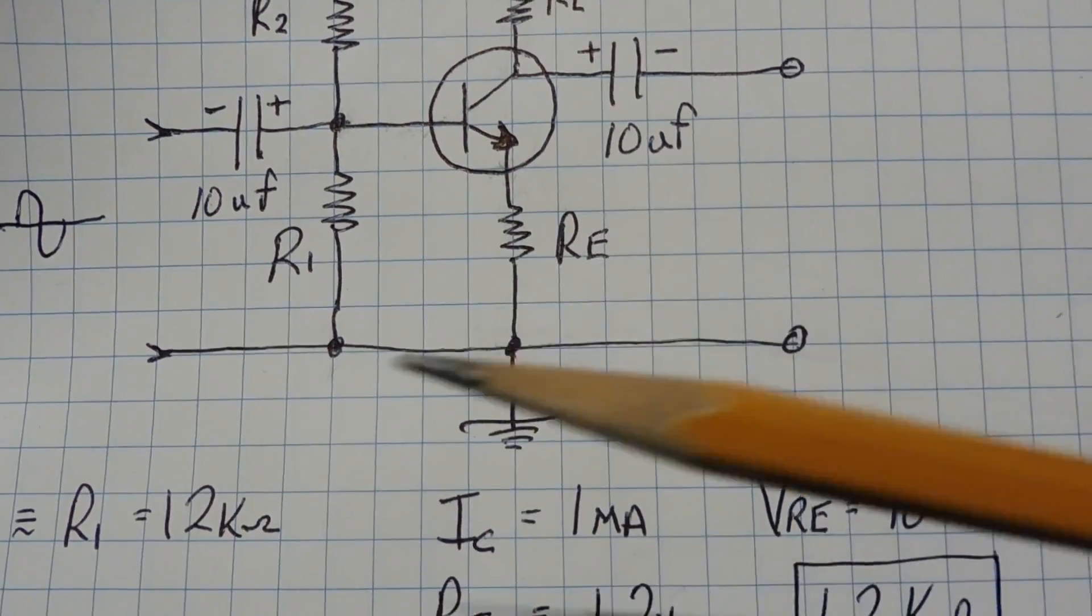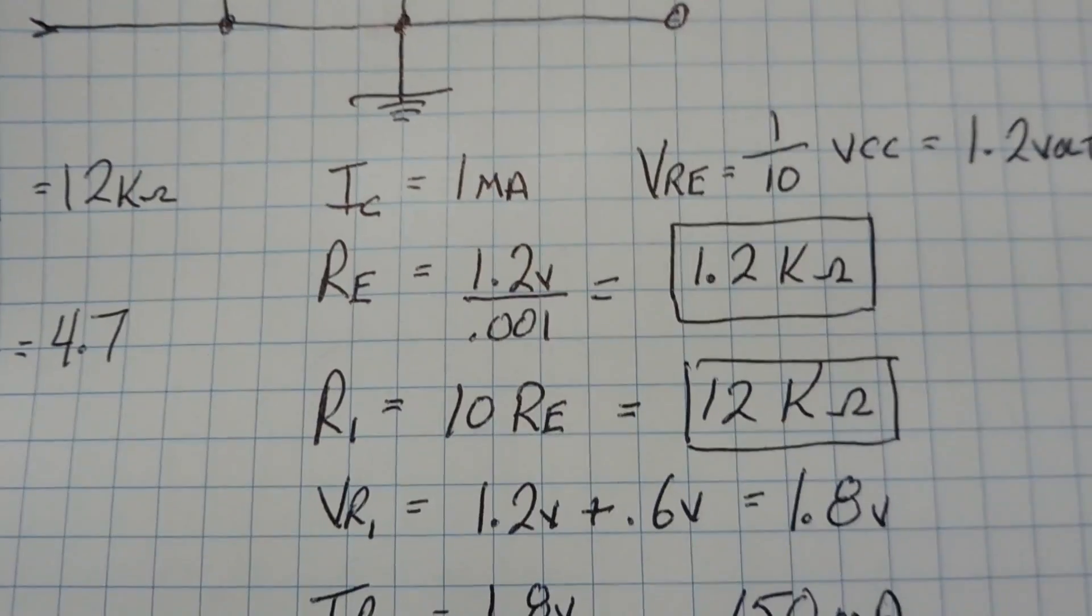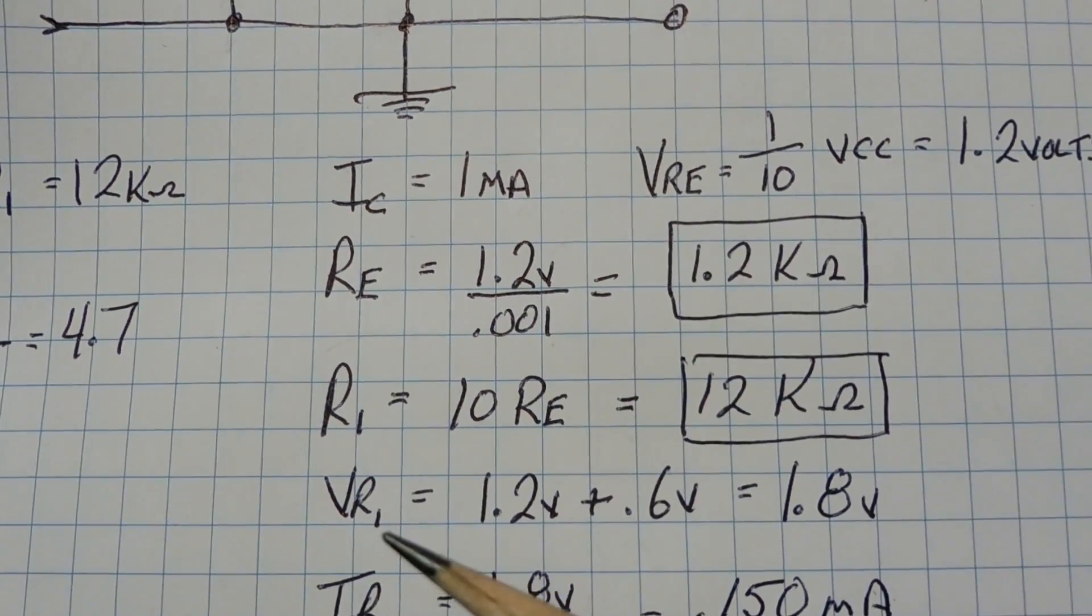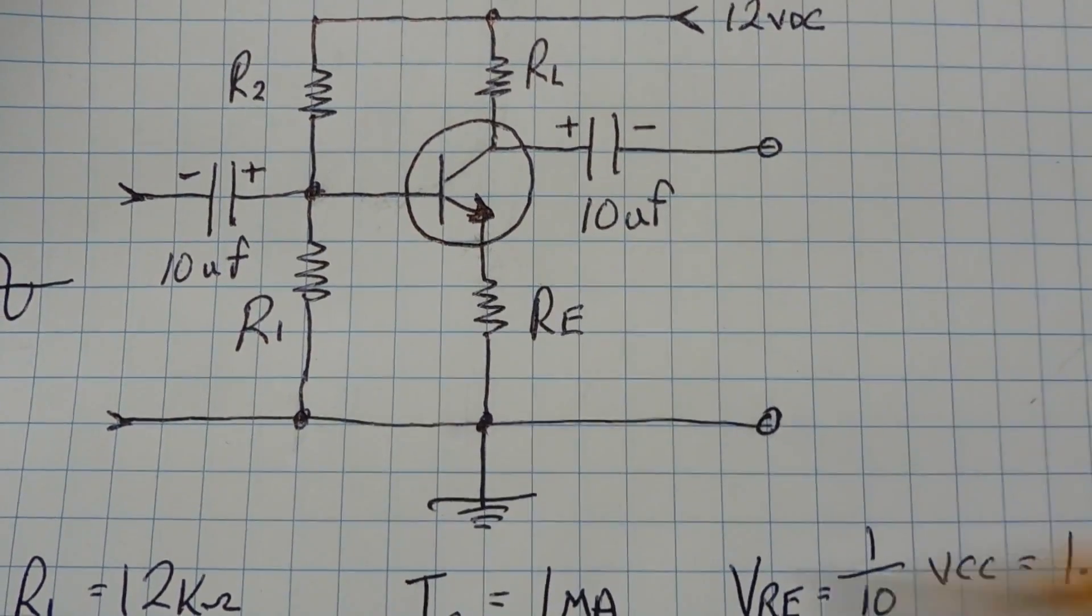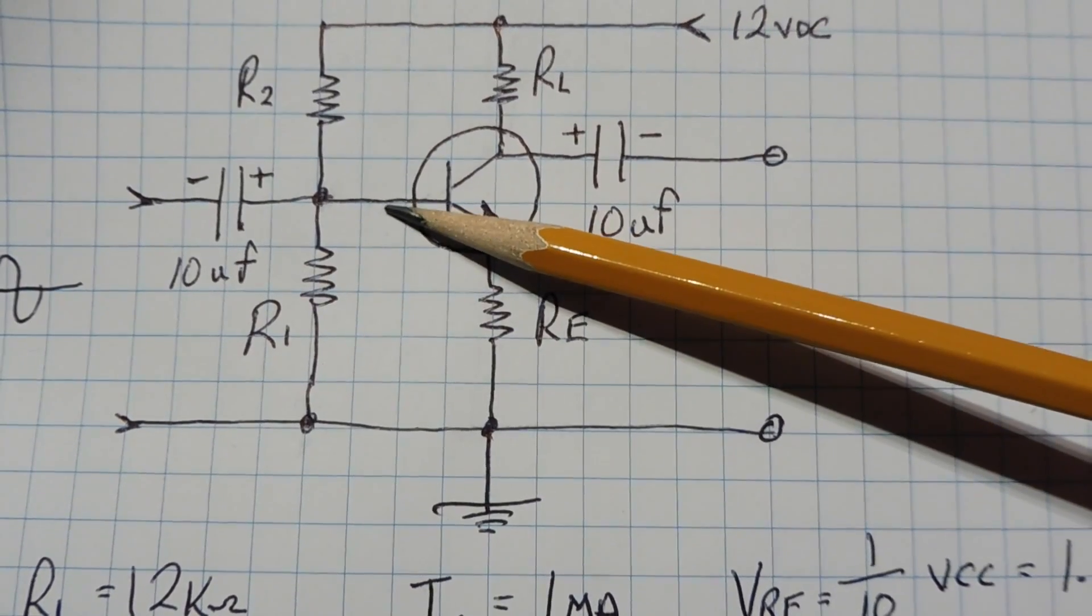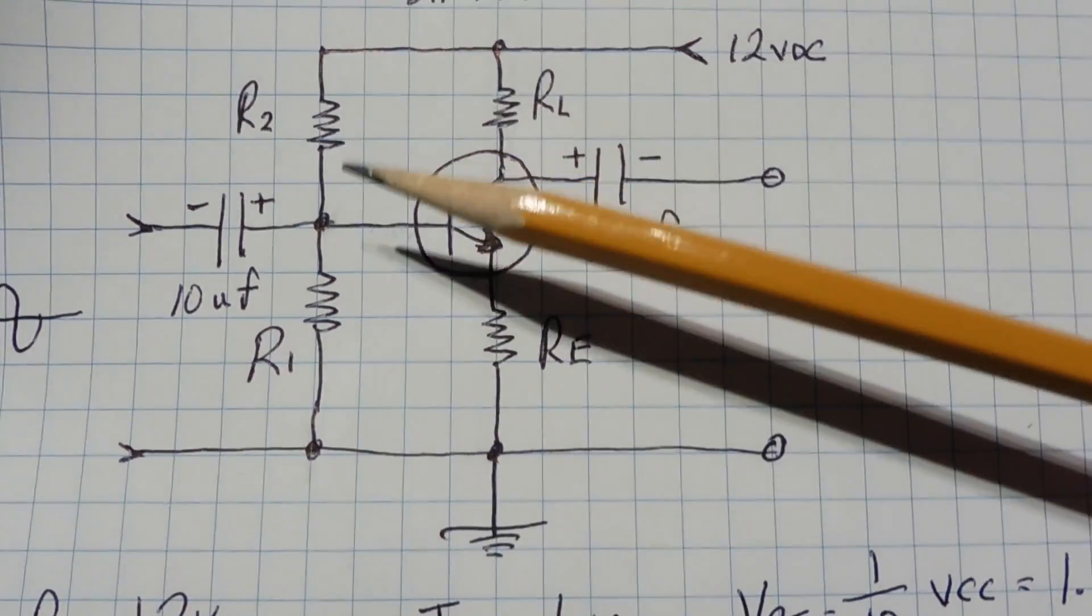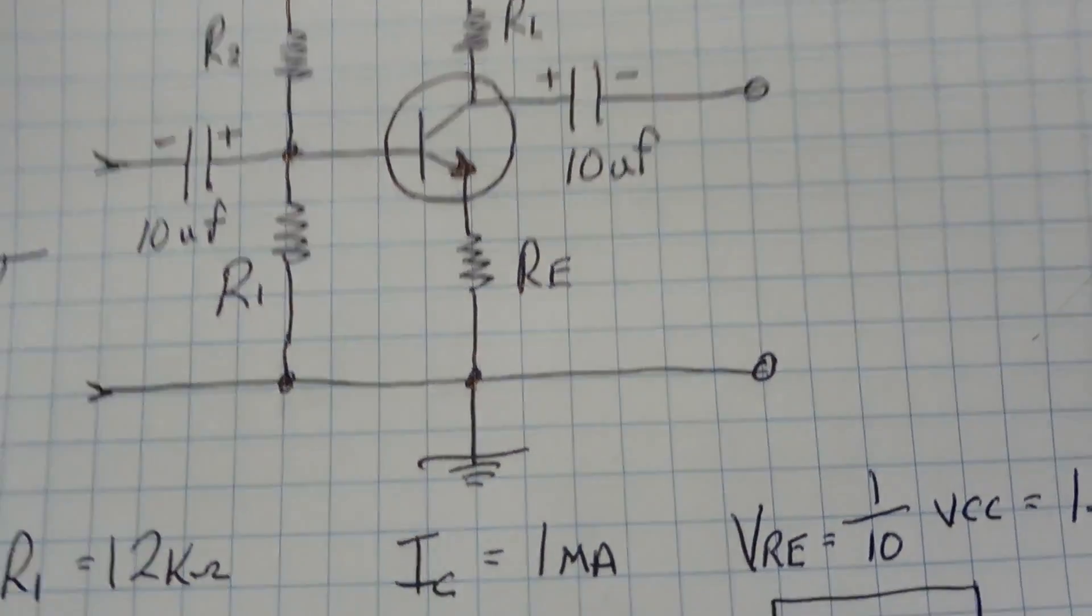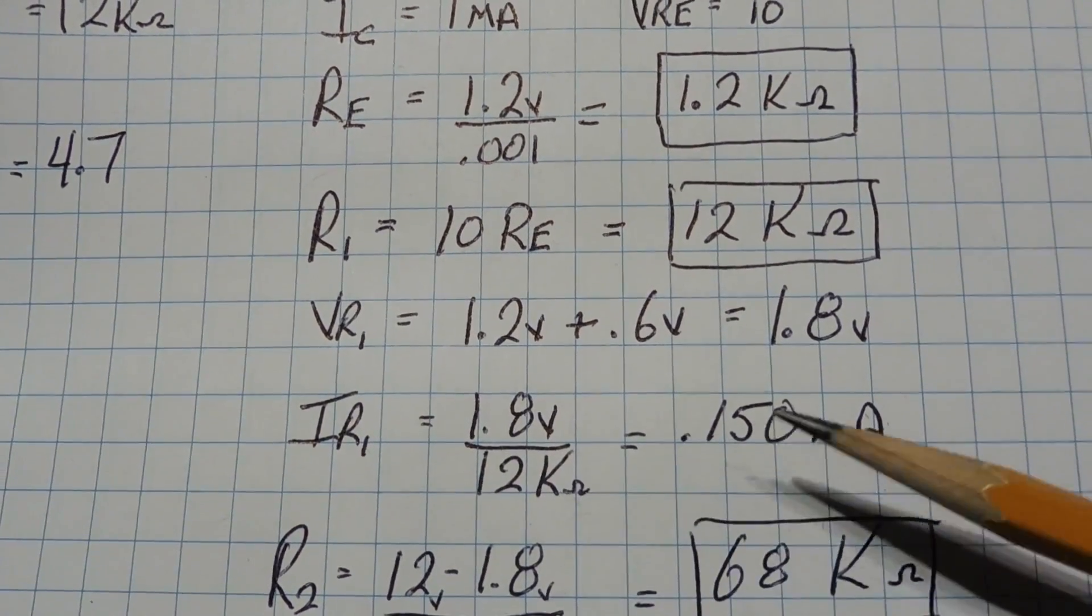So now the value of R1 will be 10 times RE, so R1 equals 10 times RE equals 12K. Now we can calculate the voltage across R1: it's 1.2 volts plus 0.6 volts. So we have 1.2 volts at the emitter and 0.6 volts as the diode drop of the transistor, so we'll have 1.8 volts across R1. We can calculate the current through R1, which would be the same current through R2. The current through R1 will be 1.8 volts divided by 12K, that'll give us 150 microamps.